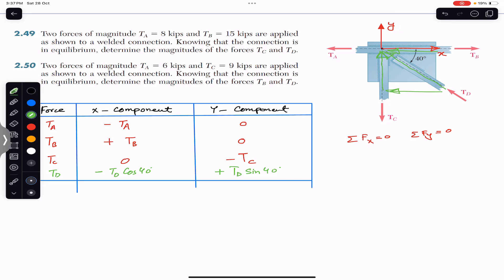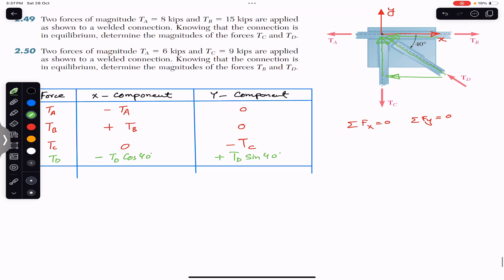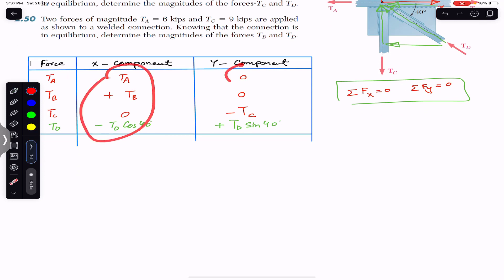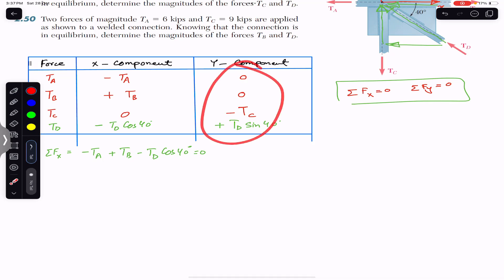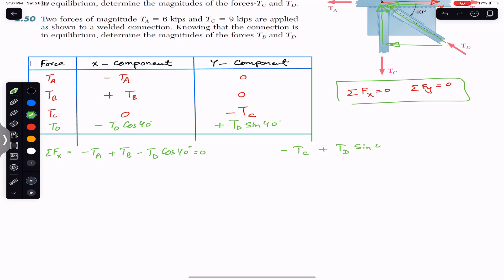Now we add all X components and set them equal to zero, and add all Y components and set them equal to zero. The X equilibrium equation is: −TA + TB − TD·cos(40°) = 0. The Y equilibrium equation is: −TC + TD·sin(40°) = 0.